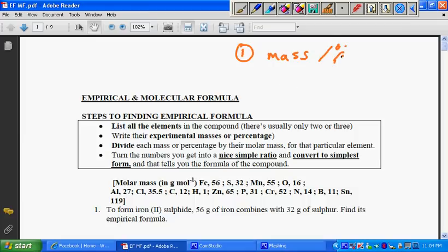The second step would be to divide each mass or percentage by the molar mass to find the number of moles. That will be mass over molar mass. The third step, you get the simplest ratio and convert to the simplest form, and then that will tell you the empirical formula of the compound.